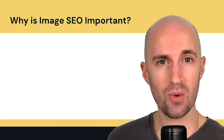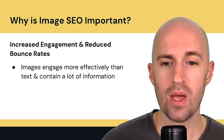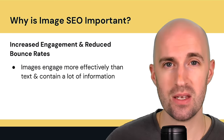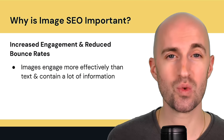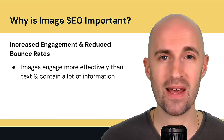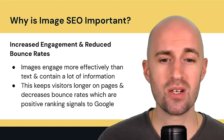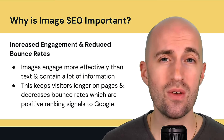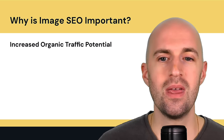Why is image SEO so important? First, increased engagement and reduced bounce rates. Images engage much more effectively than text because we're visual beings and they contain a lot more information. A picture is worth a thousand words — sometimes more. Infographics are so popular for this reason. Images keep visitors on pages longer and decrease bounce rates, which are positive ranking signals to Google, helping page rankings indirectly.